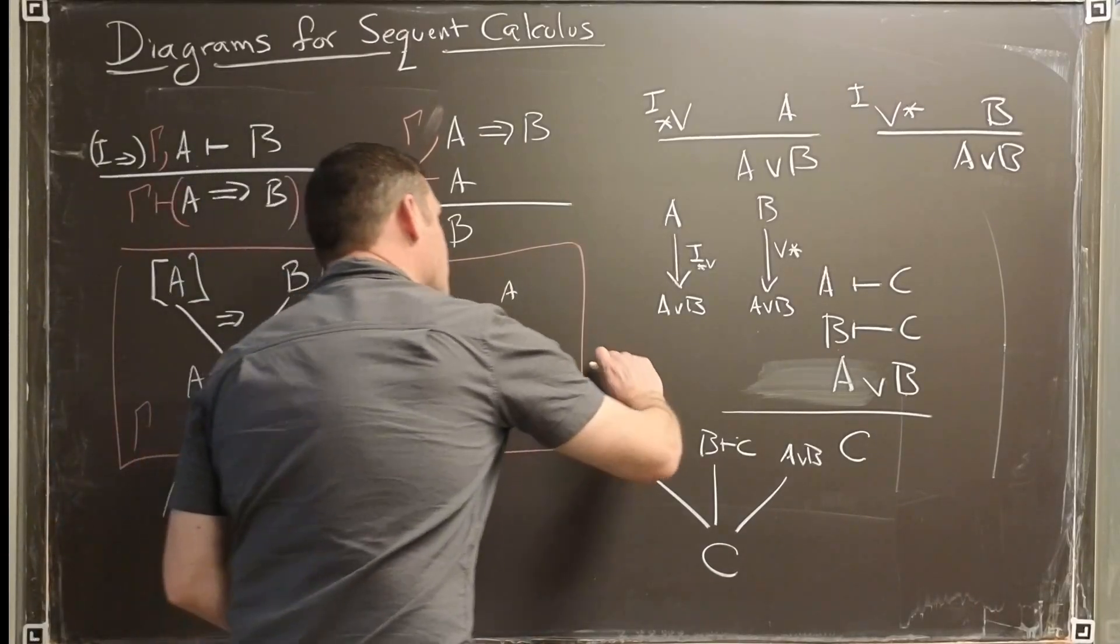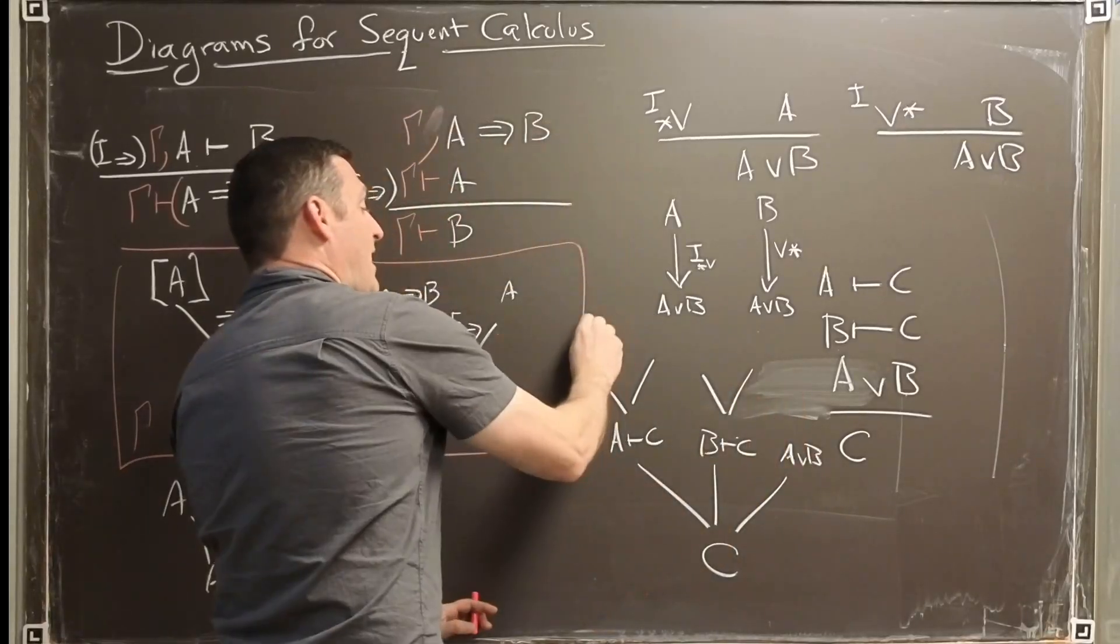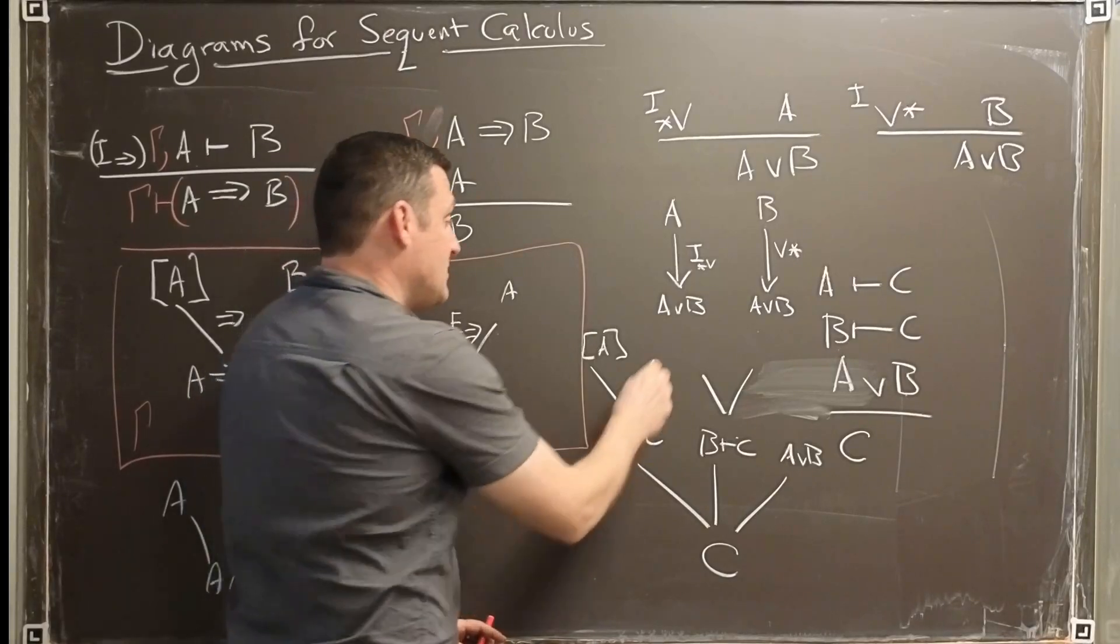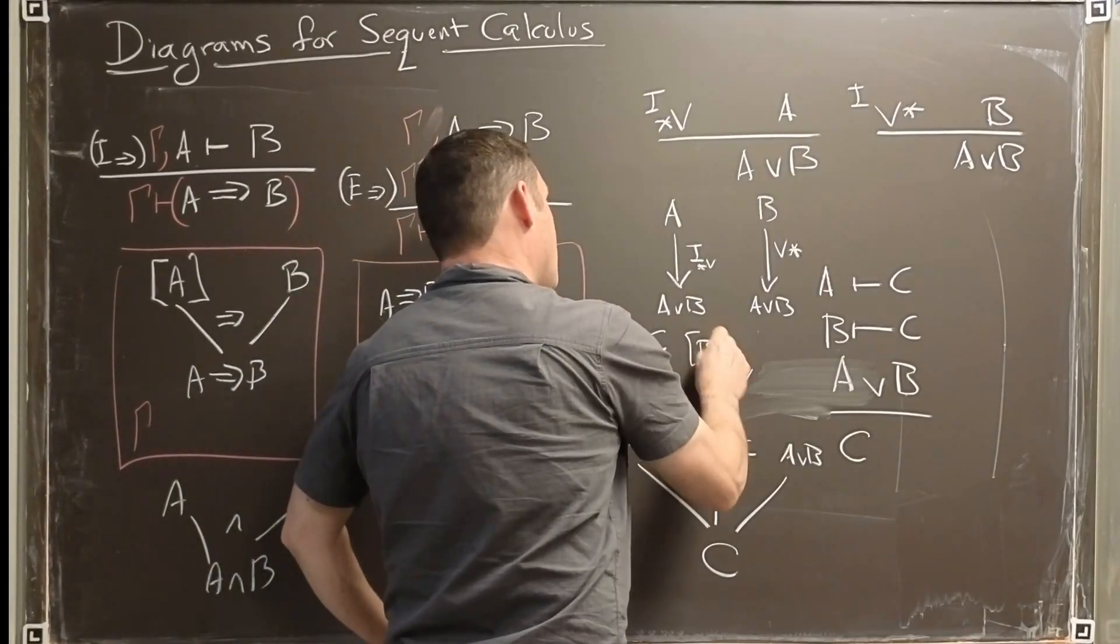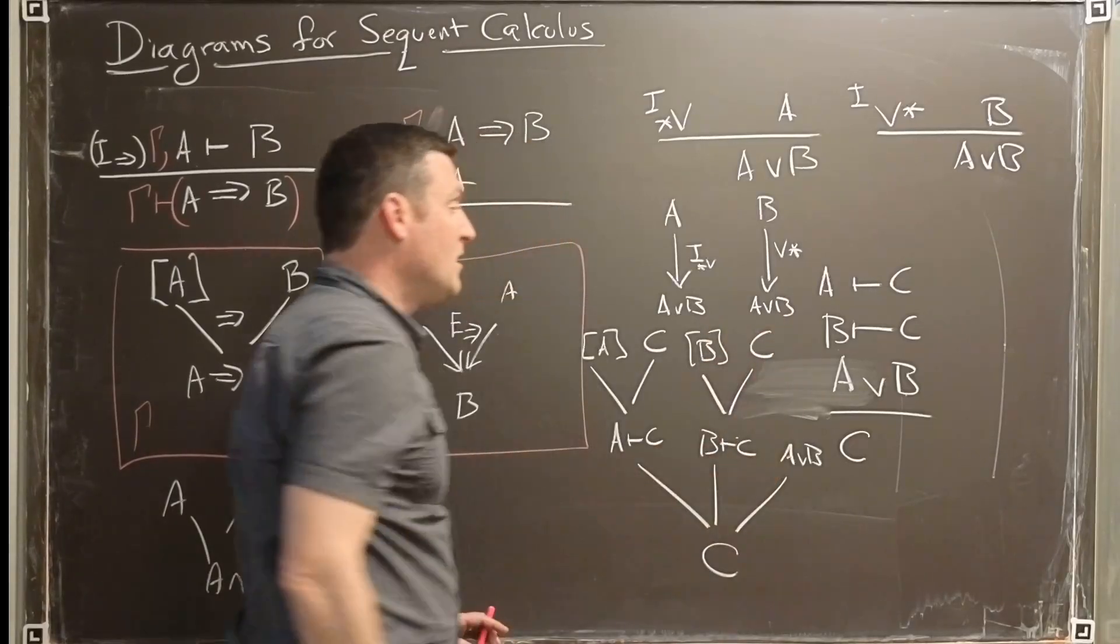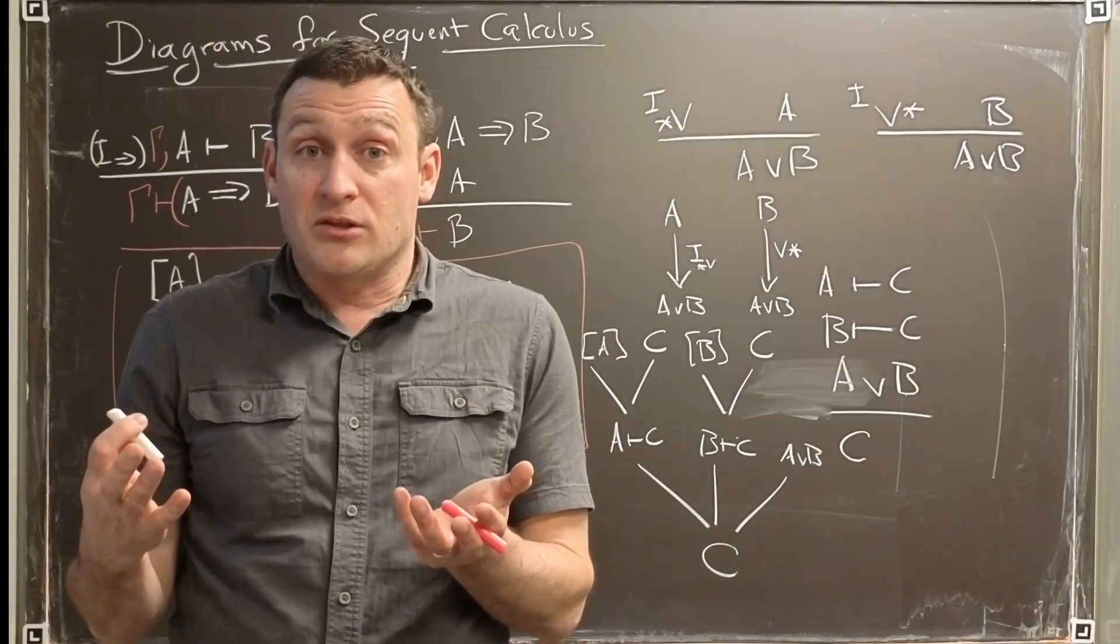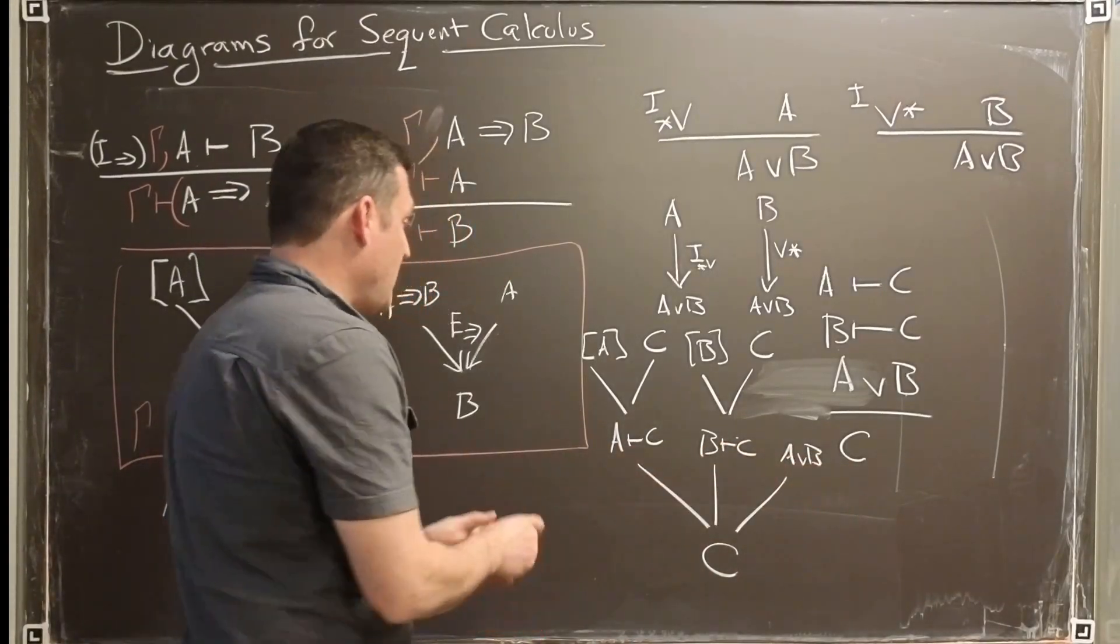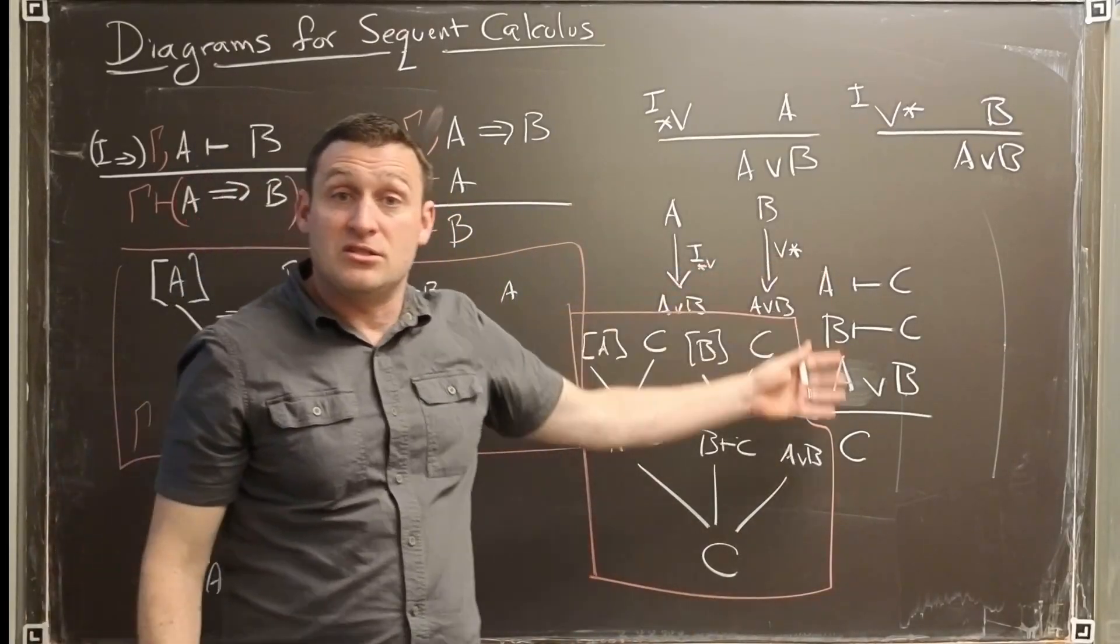Where we have A is optionally there, and when it's there, it leads to C. And here we have B optionally there, and when it's there, it leads to C. We've now made it very clear that we don't know whether A is true or B is true, we just know that together they're true. This piece right here captures this disjunctive dilemma.